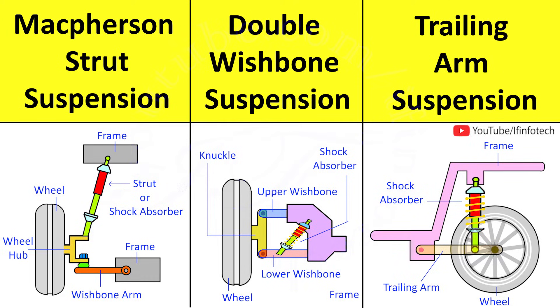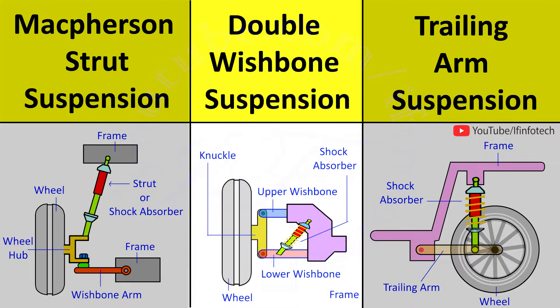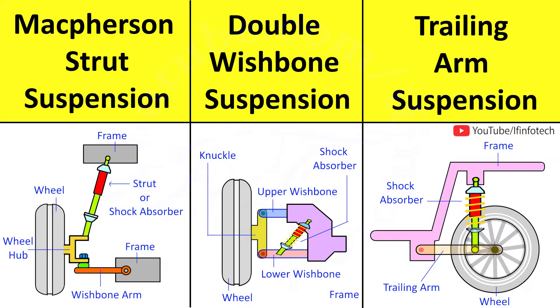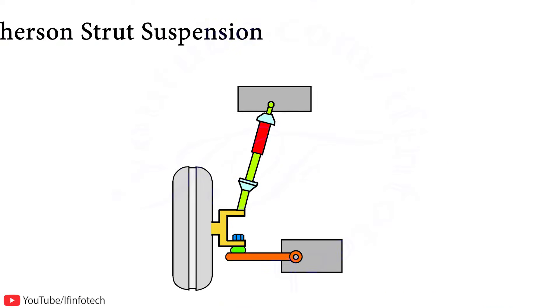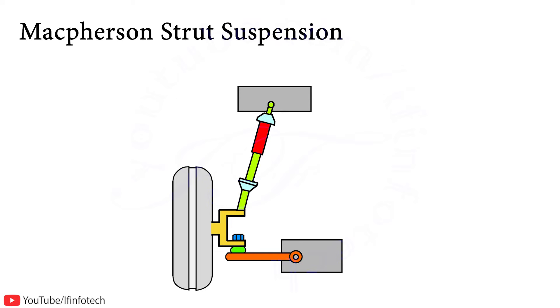In today's session we will learn about types of suspension systems, which include MacPherson strut type, double wishbone, and trailing arm suspension. I will start with the MacPherson strut system.